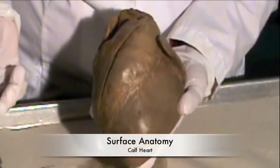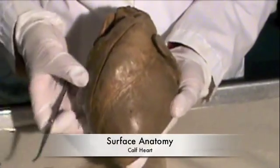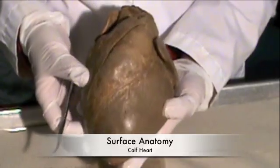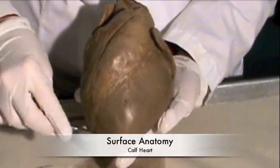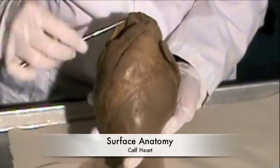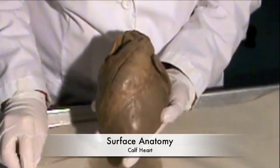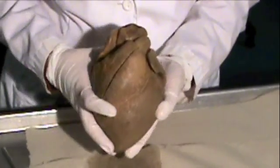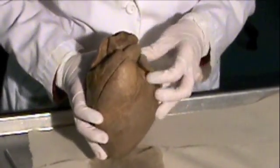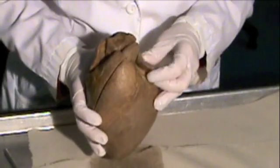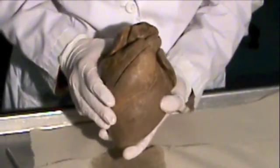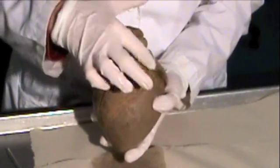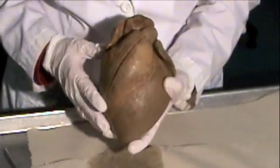I'm going to start with the surface anatomy features of the heart, and it's important to be able to orient the heart. This is the anterior surface right here, and I know that because I can see the auricles — the right and the left auricle — the flaps on the surface of the heart. Those are part of the right and the left atria.